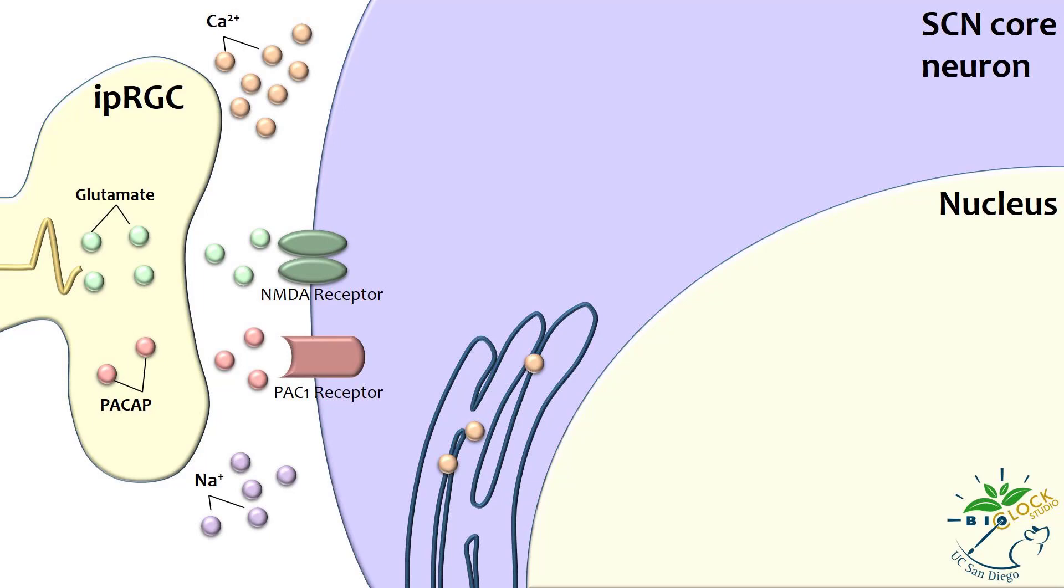In the SCN, two types of glutamate receptors, NMDA and AMPA receptors, and the PACAP receptor, PAC1, play important roles in receiving light signals.